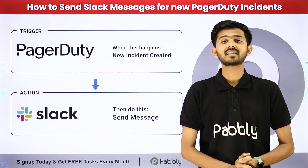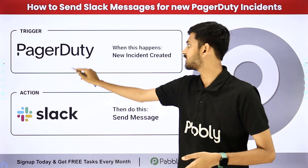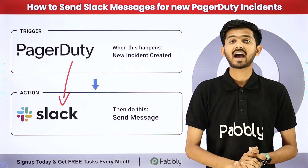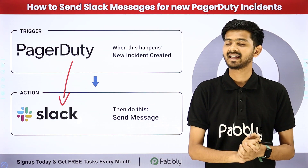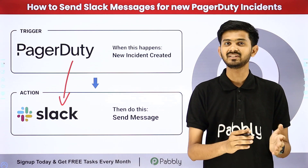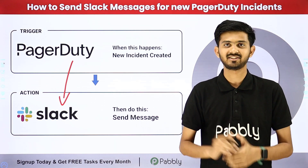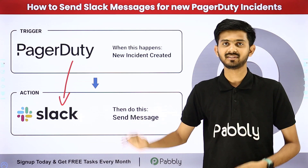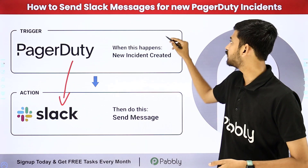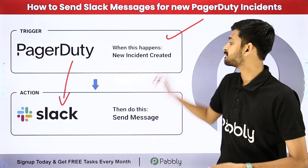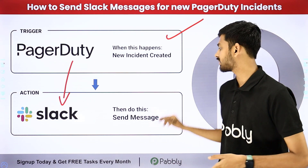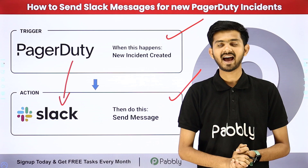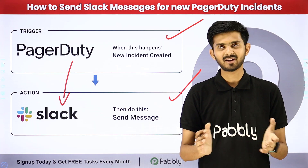For this I am going to use a connection between PagerDuty and Slack. To build this connection I am going to use PabliConnect, which is an amazing software for automation and integration. In PabliConnect I have to use Trigger and Action. The trigger application will be PagerDuty and the action application will be Slack. Let me take you to my computer screen.